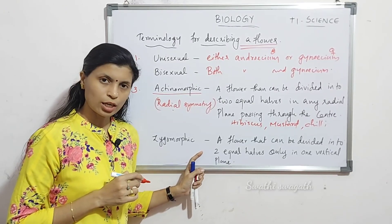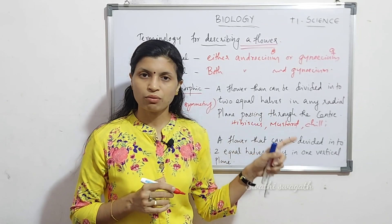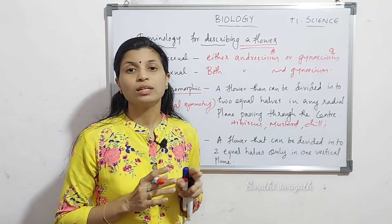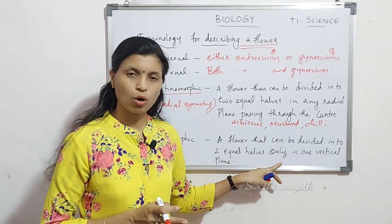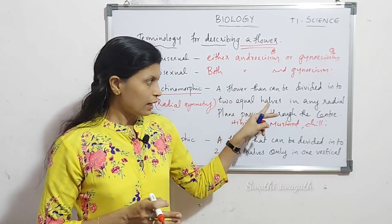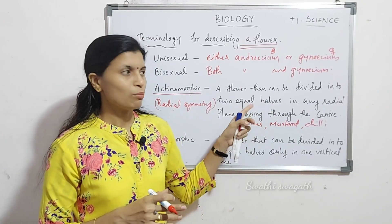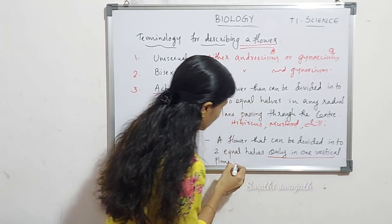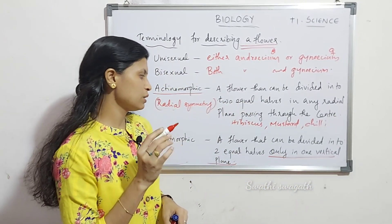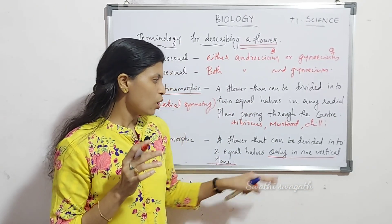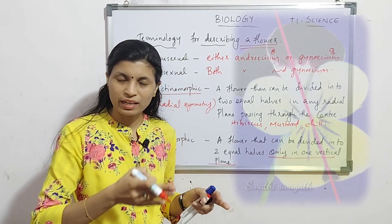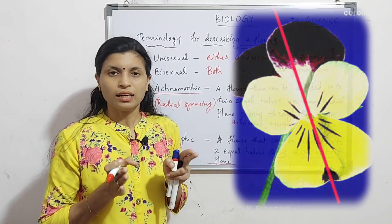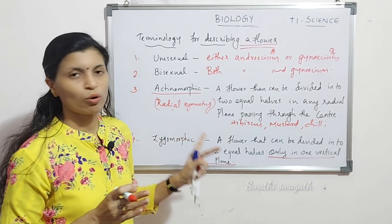The next terminology is zygomorphic. Zygomorphic means a flower that can be divided into two equal halves only in one vertical plane. Compared to actinomorphic where you can cut in any plane, here only one vertical plane gives two equal halves. Such flowers are called zygomorphic flowers.